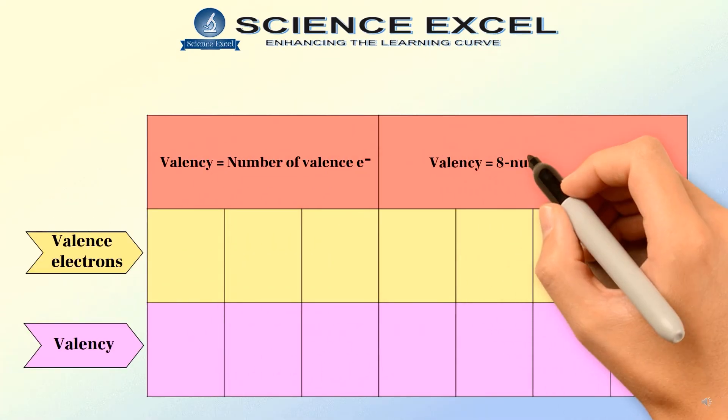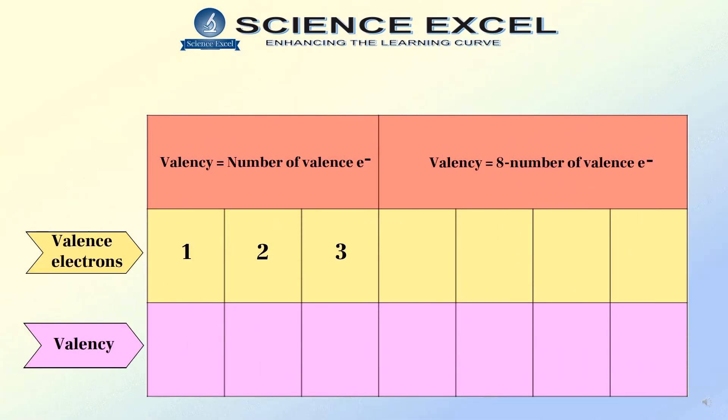If the atoms have 1, 2, or 3 valence electrons, then their valencies will be equal to the number of valence electrons—that is 1, 2, or 3.